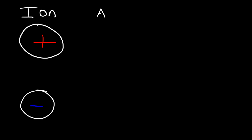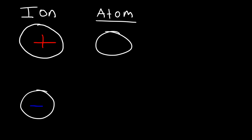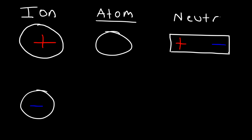Now an atom, just to compare, is electrically neutral — at least most atoms are. Now an object that's polarized is basically a dipole. So this is a polarized object: one side is positive, the other side is negative. Overall, this object is neutral because if you add up the charges, it adds up to zero. However, you do have separation of charge — one portion is positive, the other side is negative. So this object has a dipole.